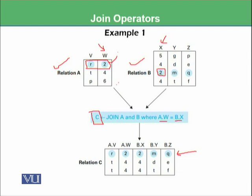Then the next row is taken. T4 has two fours — one here and one there — so we will have two rows. T4, 4DE is the next line, and then T4, 4TF is the third line. This shows how many tuples there will be based on the condition we have.